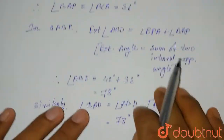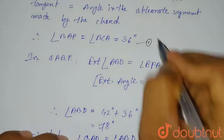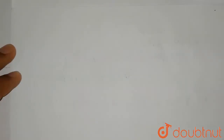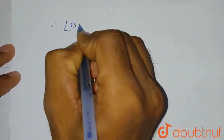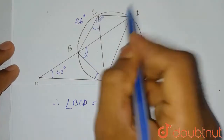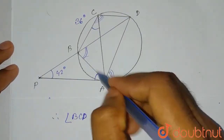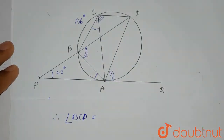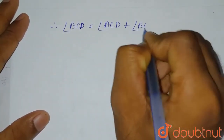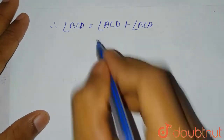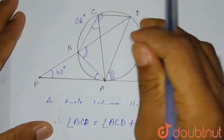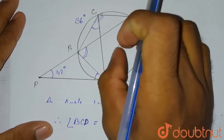So we found our first answer (BAP = 36°), second answer (ABD = 78°), and third answer (QAD = 78°). Now we have to find out angle BCD. Angle BCD will be equal to angle ACD plus angle BCA. We know the value of angle BCA is 36 degrees. Angle ACD will be equal to angle ABD because it is the angle in the same segment, as chord AD is making both of the angles.